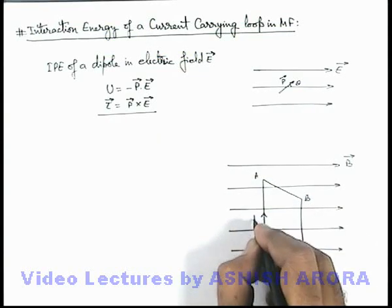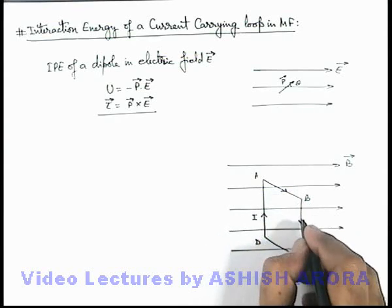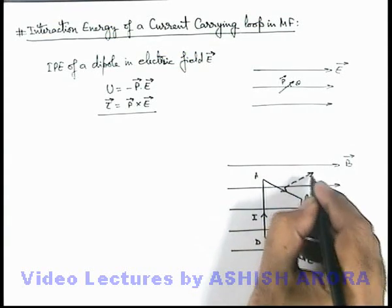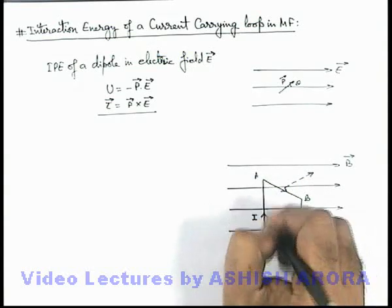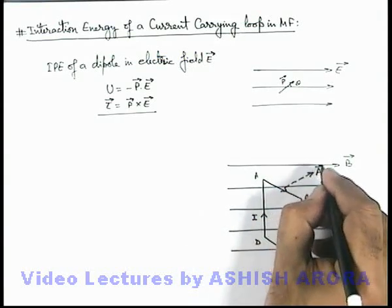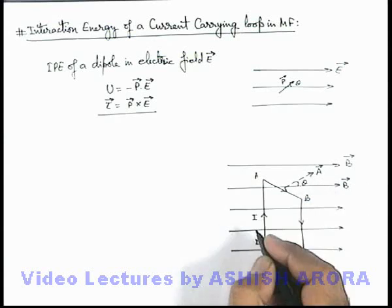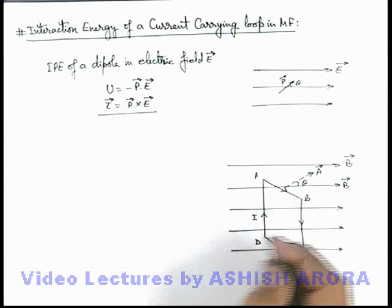Which carries a current I, and the coil is placed in the magnetic field such that its area vector, which is perpendicular to the surface of this coil, is making an angle theta with the direction of magnetic induction vector.